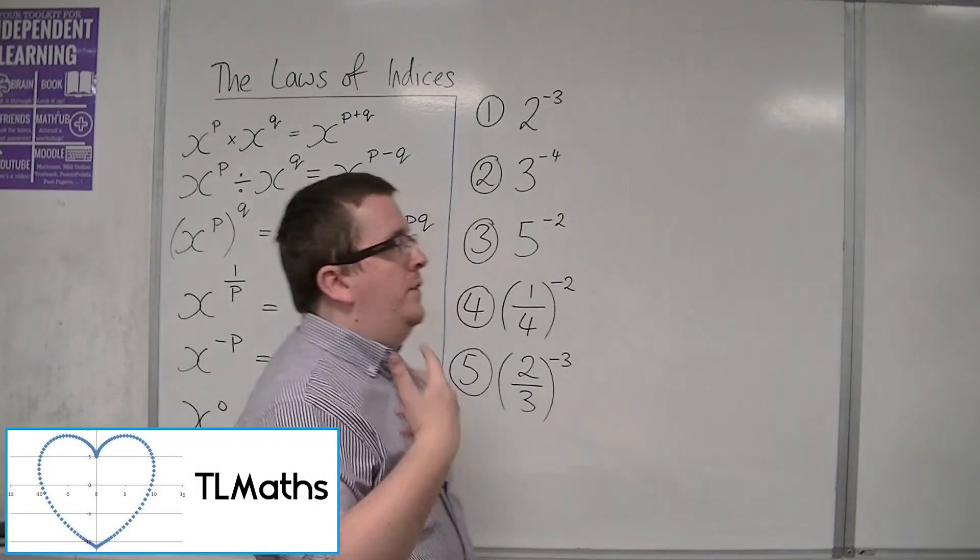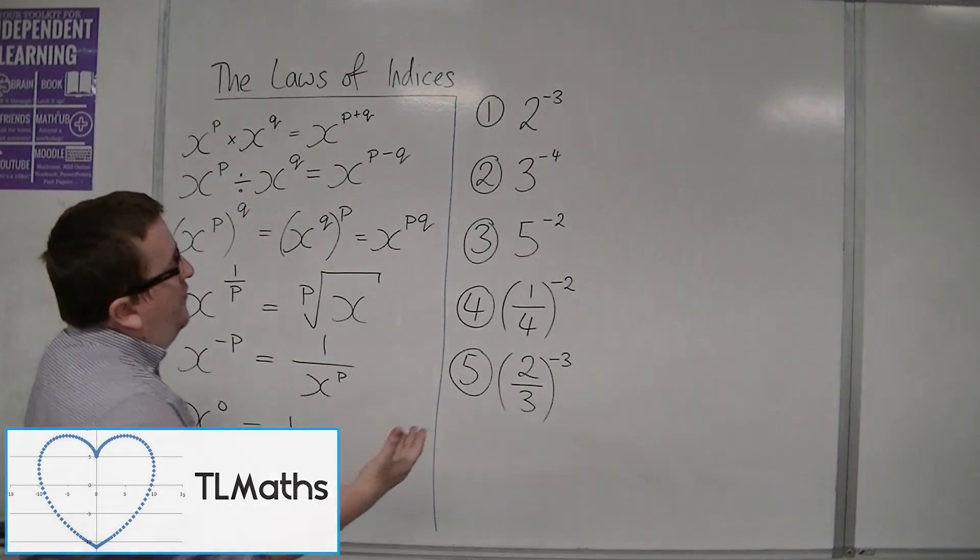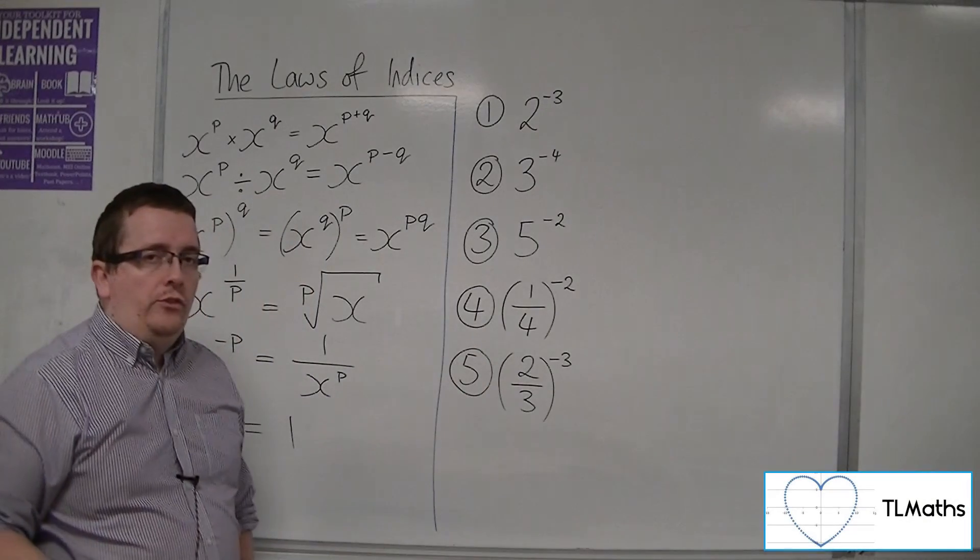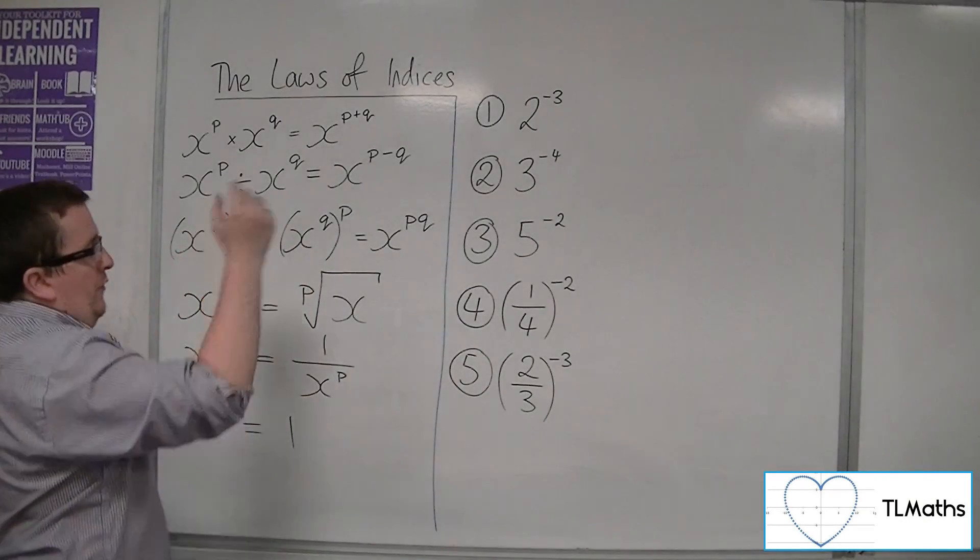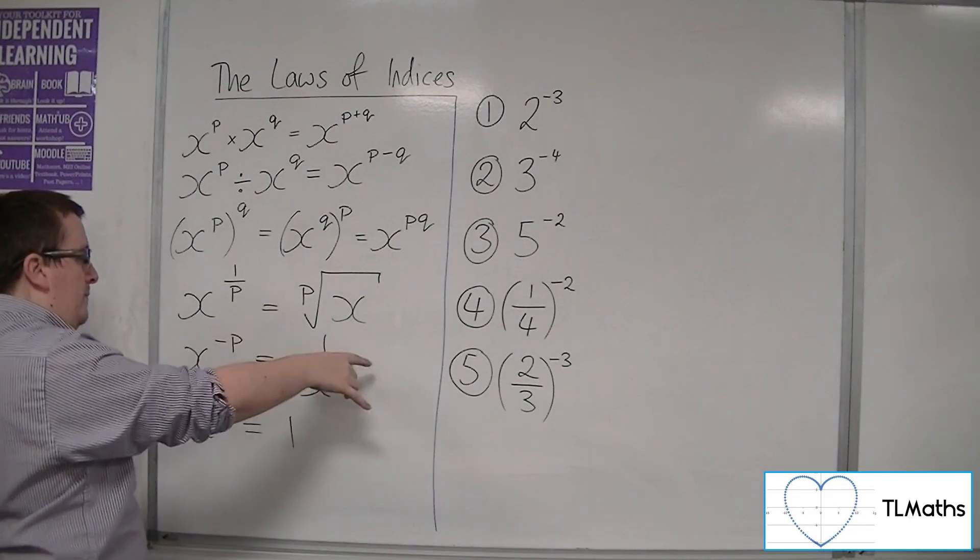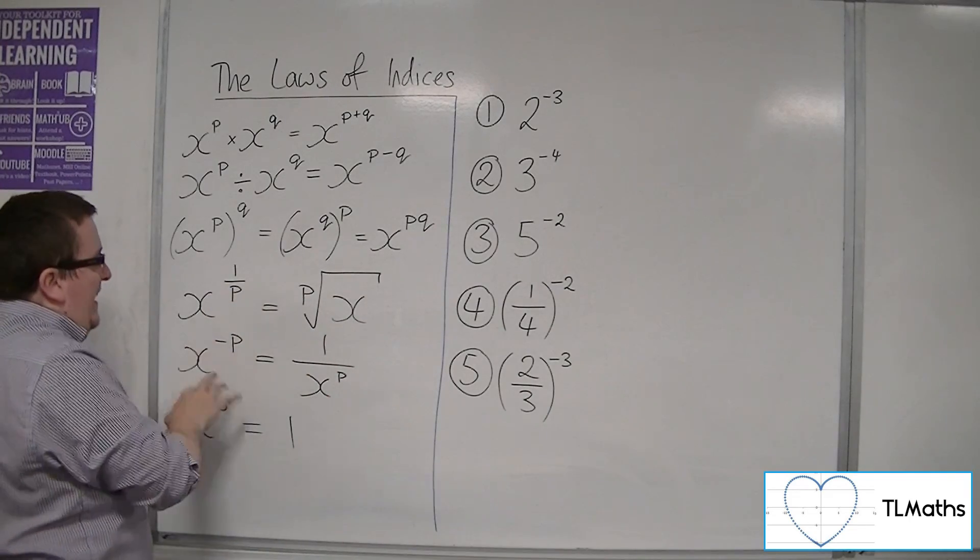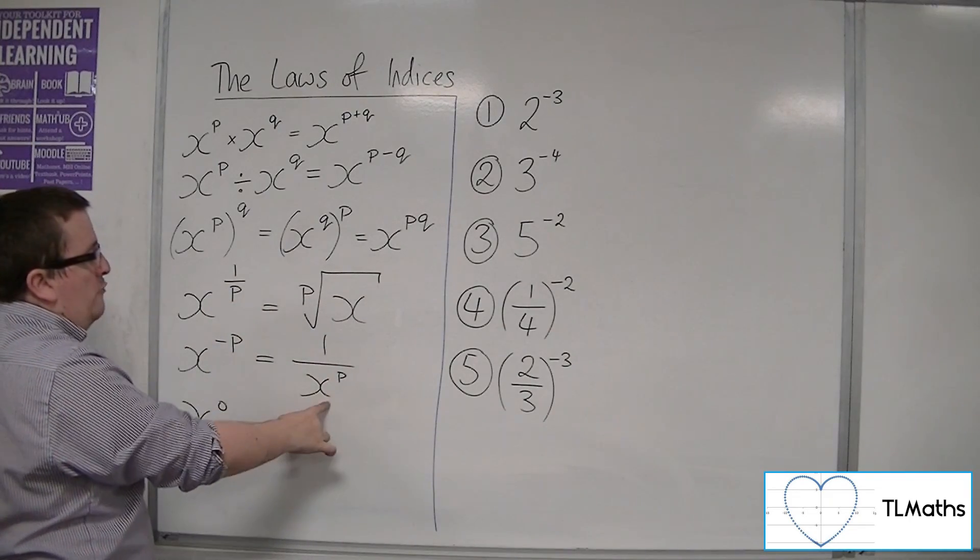Let's say I want to work with negative indices and I want to evaluate each of these three. If I look at 2 to the minus 3, I'm going to be using this law here. This x to the minus p is 1 over x to the p.